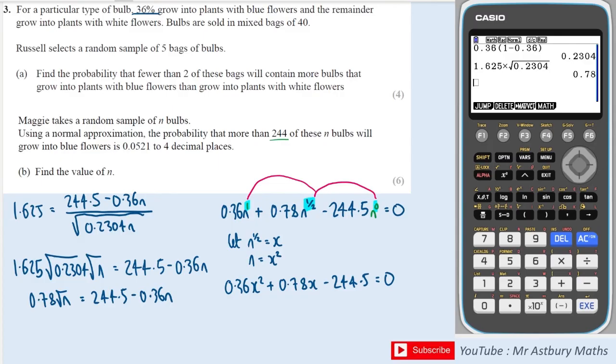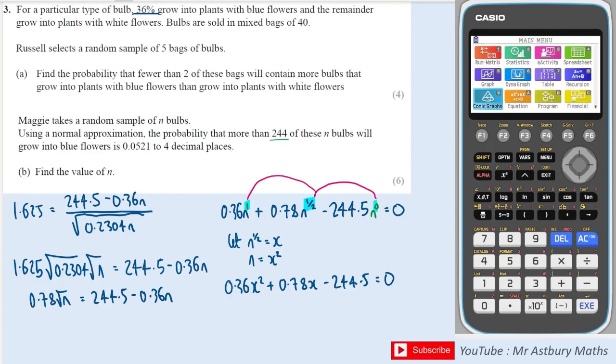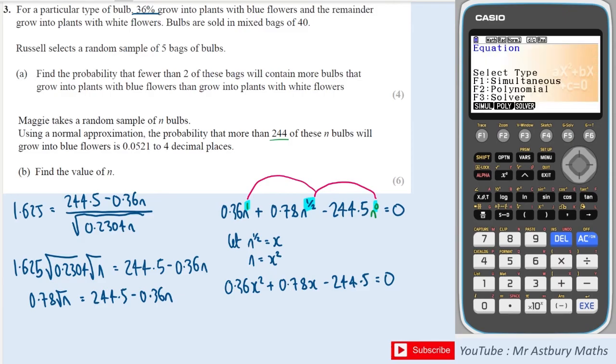I can then go to my calculator and solve that quadratic by going to menu, equation, polynomial degree 2, and we have 0.36, 0.78, and minus 244.5.